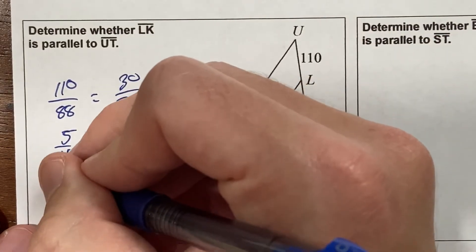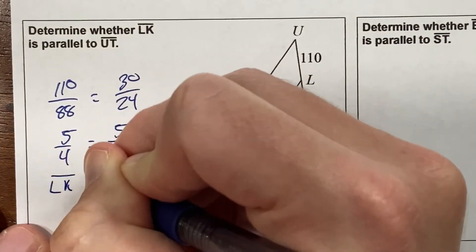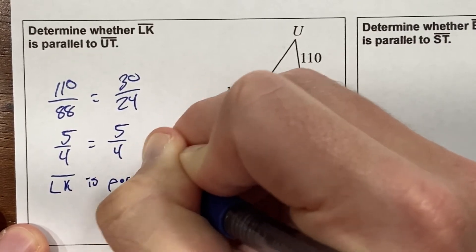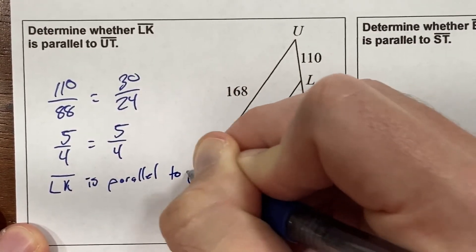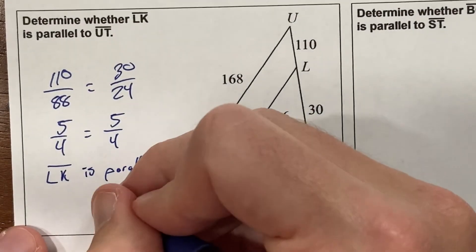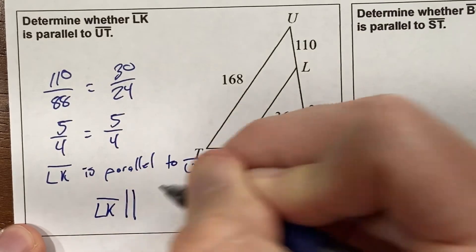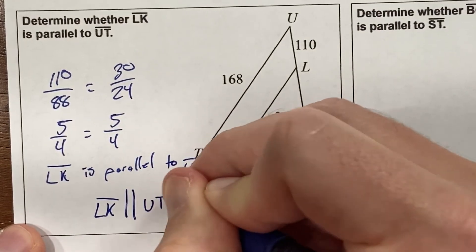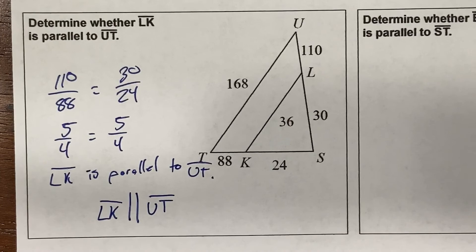Since both ratios reduce to 5 over 4, the scale factor is the same on both sides, so yes, these lines are parallel. You can write LK is parallel to UT, or use the parallel symbol — two vertical lines — to save time.